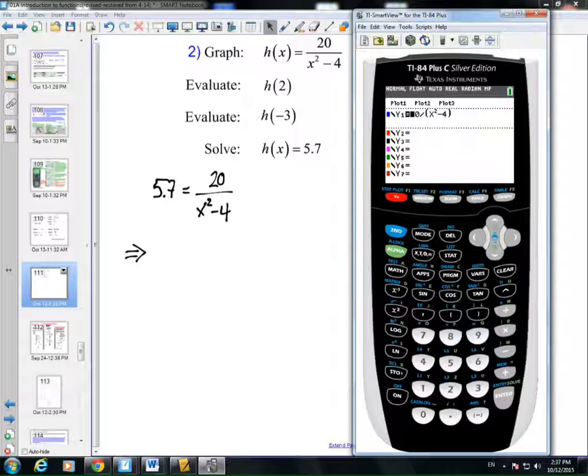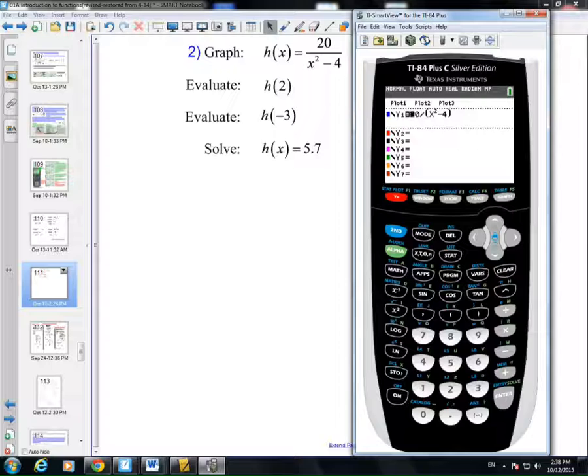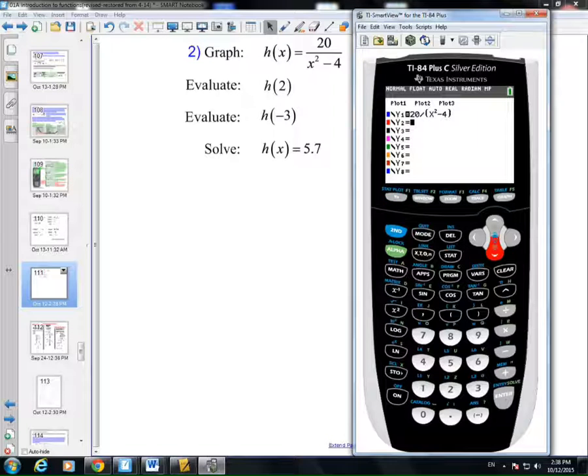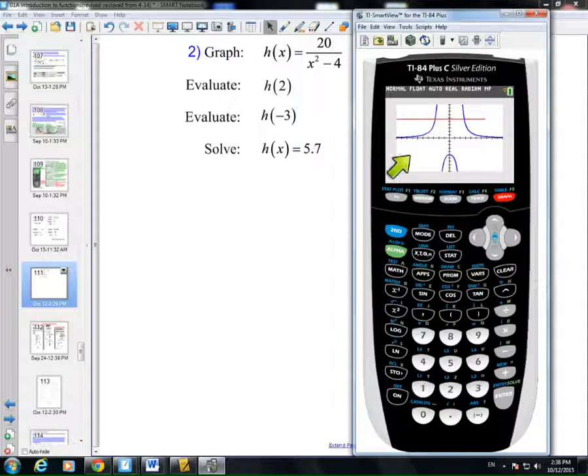To find the solutions, I first go to my calculator, and I'm going to make y2 equal to the 5.7. So h(x) is 5.7. I'm going to go to the graph and see how many solutions to anticipate, and it looks to me like we're going to have two unique solutions to the equation that I just wrote down recently.